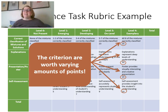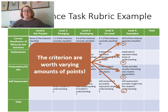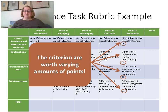Your criteria should not all be worth the same amount of points. In my example, the explanations are the most important thing — they're worth 50 points. The most important thing to me is that students really understand why things are mixtures and solutions. The least number of points is on their self-assessment. So everything should add up to 100, but everything should not be worth the same amount of points.